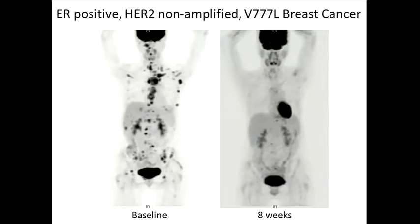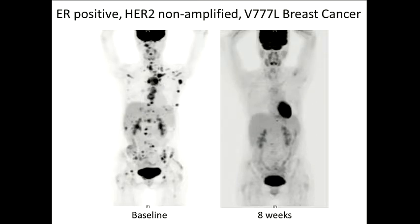And we've seen some incredible responses — this is a patient with ER-positive, HER2 non-amplified breast cancer, so we would call this HER2 normal, no FISH amplification. But the patient has a V777L mutation in the ERBB2 gene, analogous to L858R in EGFR. Eight weeks later there's a remarkable response, and we've got a woman now almost a year with a complete response. We've seen some incredible responses to neratinib in this small subset of breast cancer patients with HER2 mutations — about 1% of patients with breast cancer.